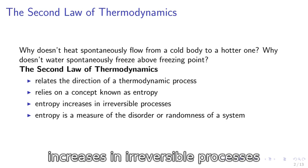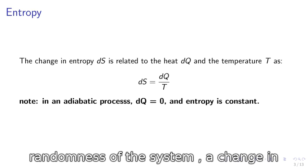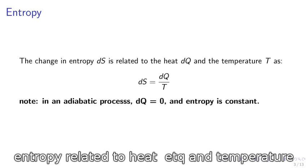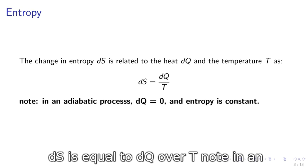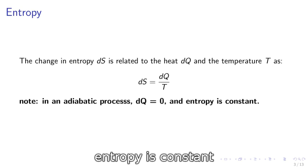Entropy increases in irreversible processes. Entropy is the measure of the disorder or randomness of a system. The change in entropy dS is related to heat dQ and temperature T as dS equals dQ over T. Note, in an adiabatic process dQ equals zero and entropy is constant.